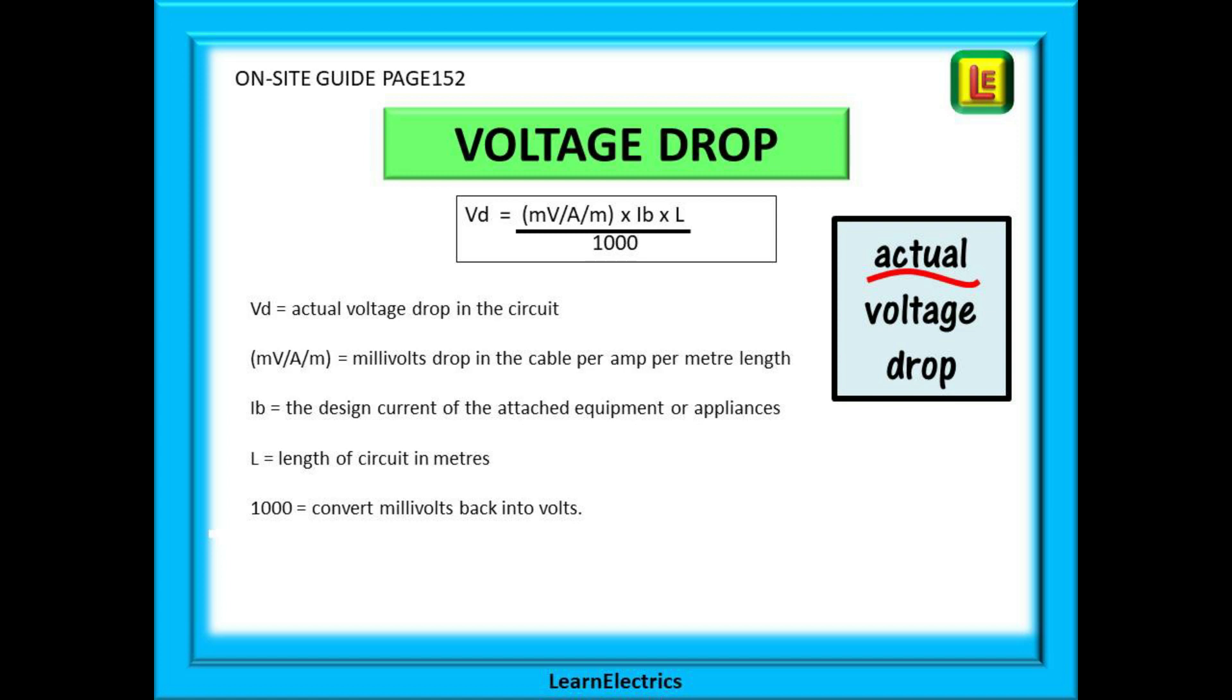Finally we have this number 1000. We must use this number to convert millivolts back into volts so that we can compare our actual volts drop to the maximum volts drop.